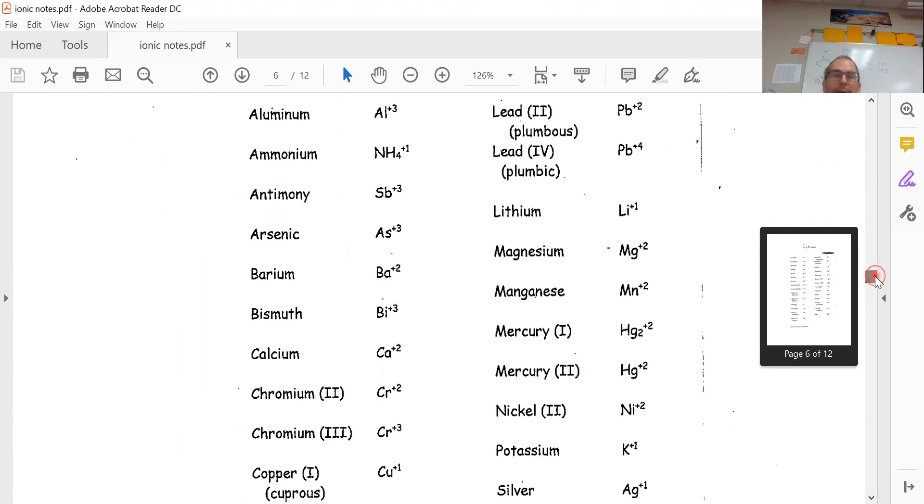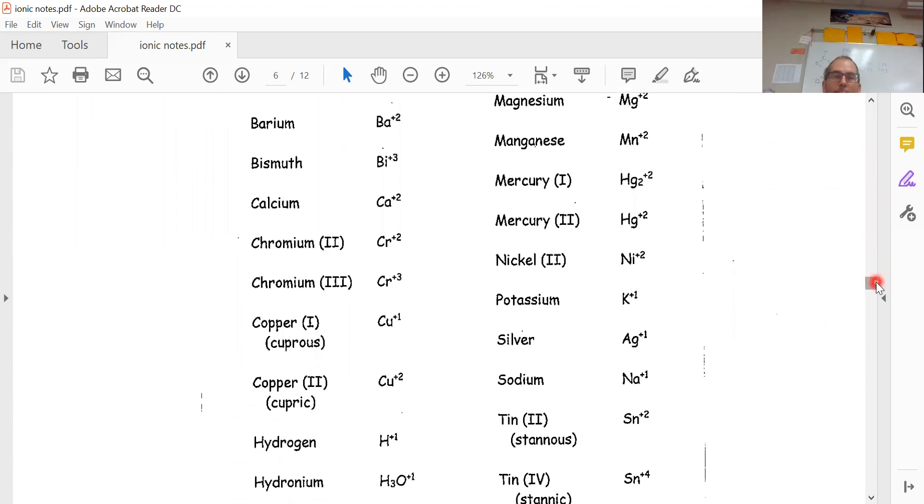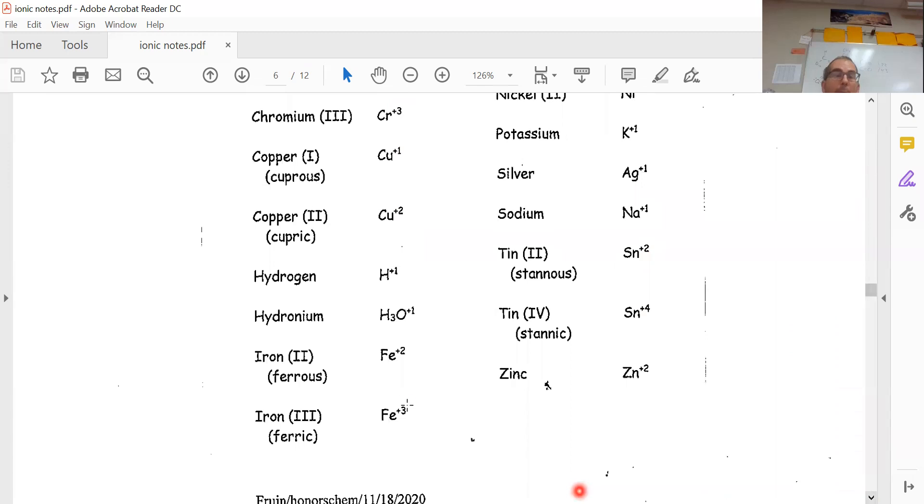The result is that in our cations we have things like chromium which can be plus two or plus three, or copper is commonly plus one or plus two, or mercury—you can get different charges on mercury, different charges on tin, different charges on iron. So what happens is when we want to name things we want to be specific.